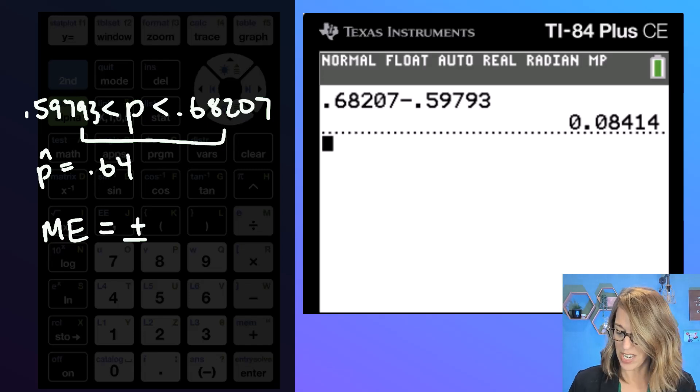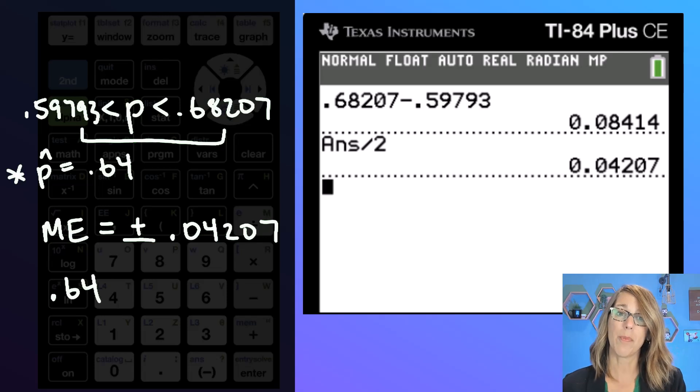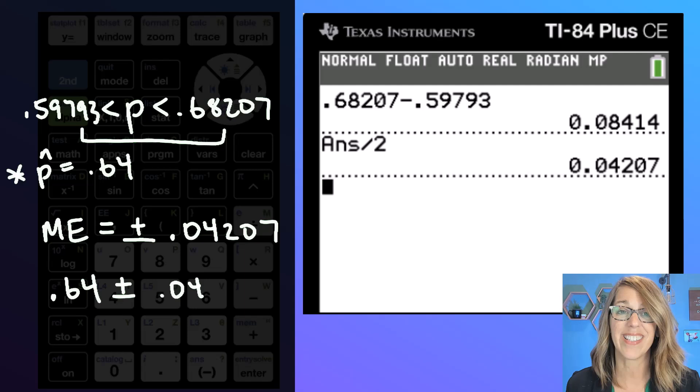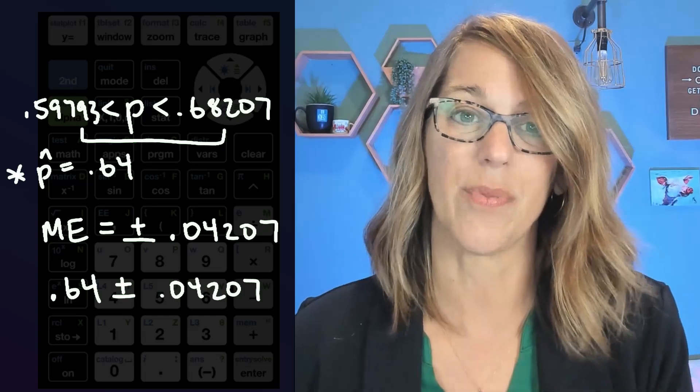So I'm going to hit my slash key or my division key and then divide by two and I get that margin of error of 0.04207. So now I can take that sample proportion which was 320 over 500 but as a sample proportion I've got this plus or minus 0.04207. We are 95% confident that it lives in this range.